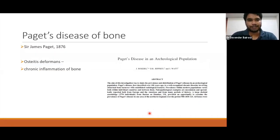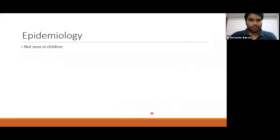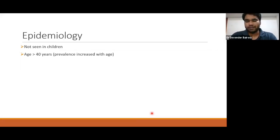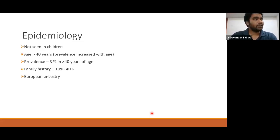Paget's Disease was first described by Sir James Paget in 1876; he thought it was a chronic inflammation of bone. Studies have found many UK mummies from 900 to 1500 AD with skeletal features of Paget's Disease. Epidemiologically, cases are generally not seen in the pediatric age group — mostly in patients over 40 years, with prevalence increasing with age. Prevalence is roughly 3% in those over 40 in countries where it is prevalent. The disease is commonly seen with European ancestry — UK, USA, France, Spain, Italy — while in India it is least prevalent.